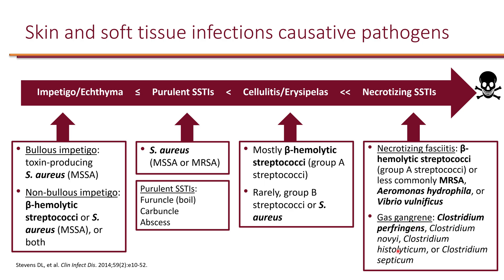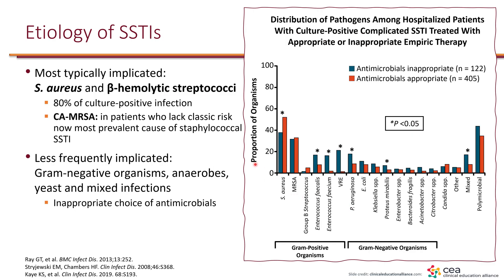When looking at all skin and soft tissue infections collectively, most are due to Staphylococcus and beta-hemolytic Strep, so treatment targets these two organisms for the most part. Eighty percent of culture-positive infections are from these two. Community-acquired MRSA is a significant portion of Staphylococcus aureus cases, and data has shown that a good portion of treatments have been inappropriate — either due to resistance or inappropriate antimicrobial selection.